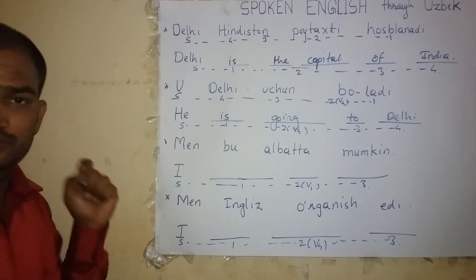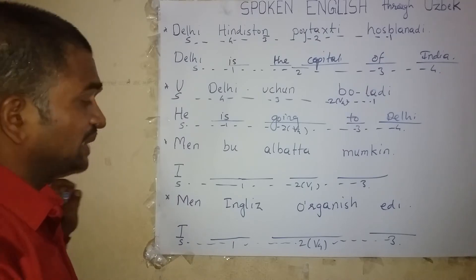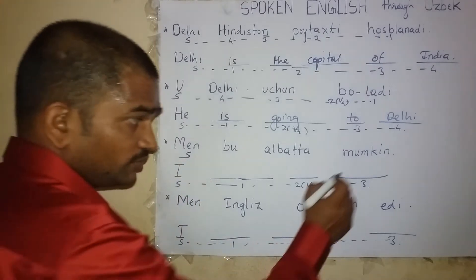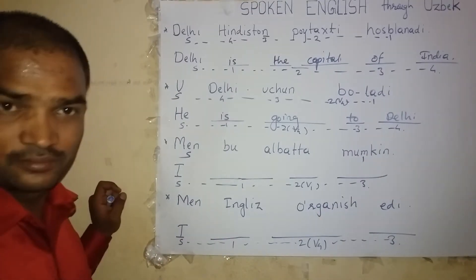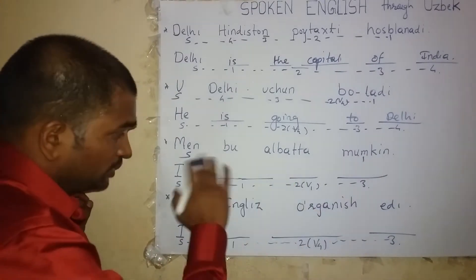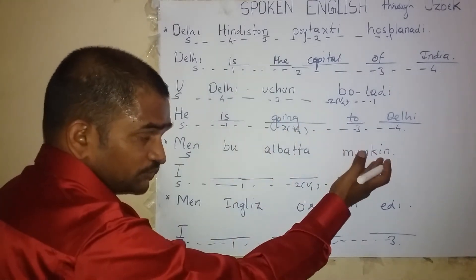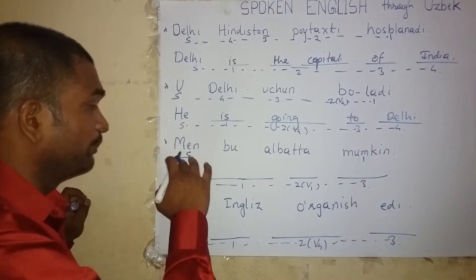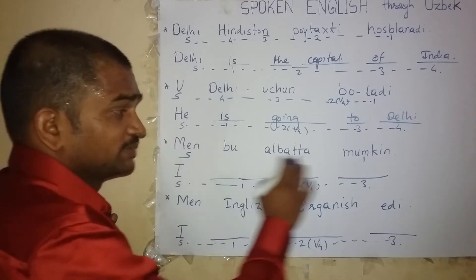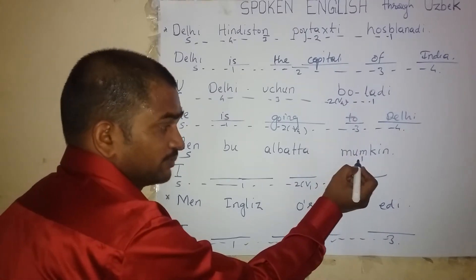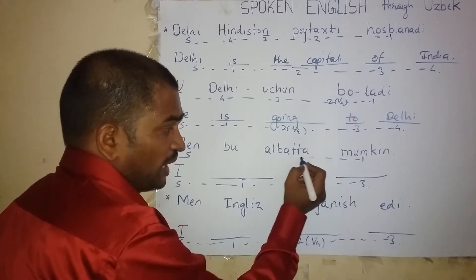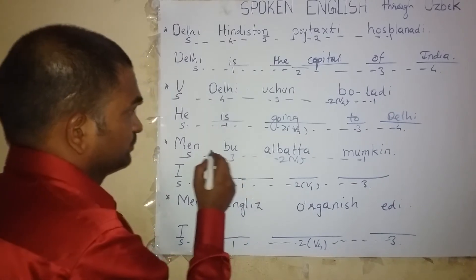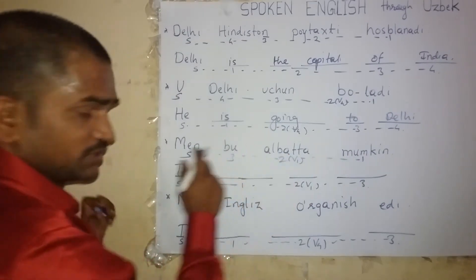Men bu albatta mumkin. The word for 'men' is 'I.' The word for 'mumkin' is 'can.' After finding the subject, go to the end of the sentence and come back. The word for 'men' — I. The word for 'mumkin' — can. I can. The word for 'albatta' — do. The word for 'bu' — this. I can do this.